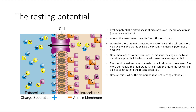At rest, the membrane itself normally prevents free diffusion of ions, although you do have channels that allow ions to flow back and forth at varying rates. In a regular cell, there are more positive ions outside of the cell and more negative ions inside the cell. So your resting membrane potential will be negative — for our cells, it's negative 70 millivolts, because there are more negative ions inside the cell.